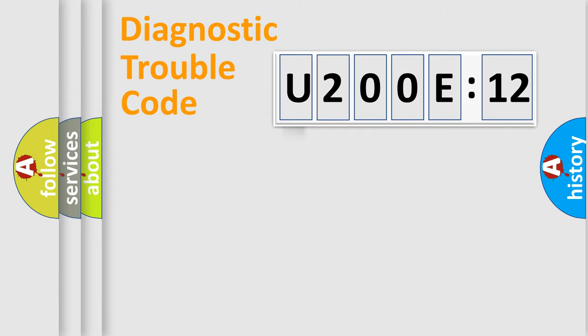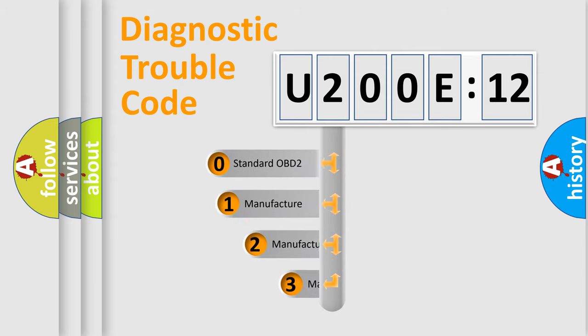Powertrain, Body, Chassis, Network. This distribution is defined in the first character code.